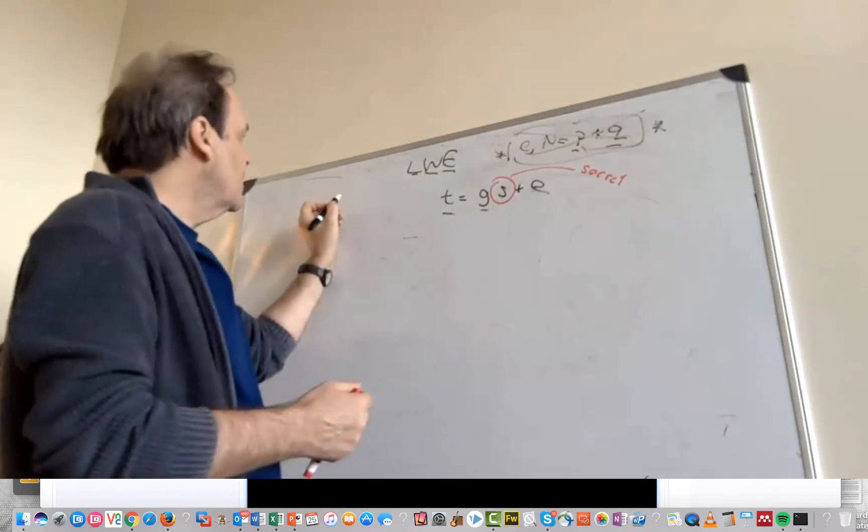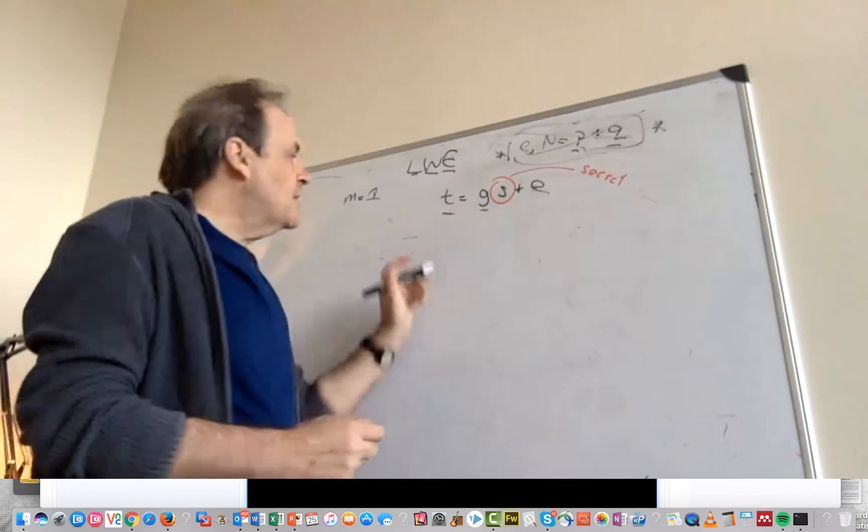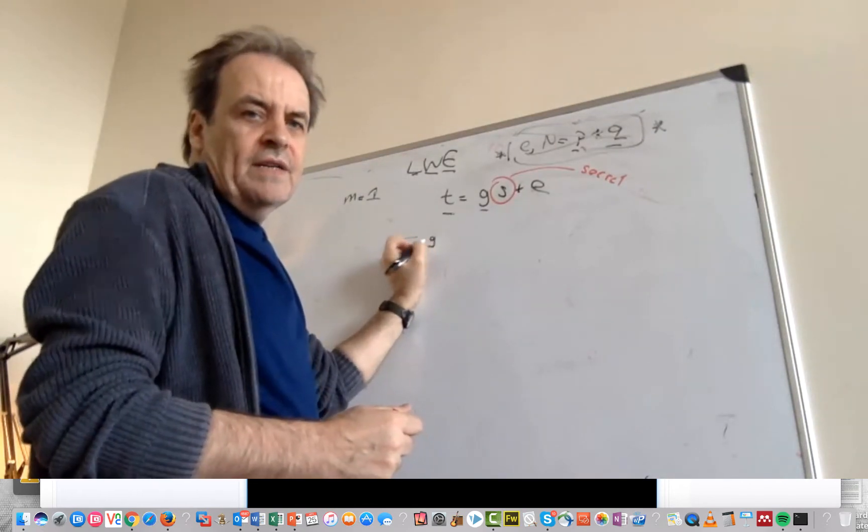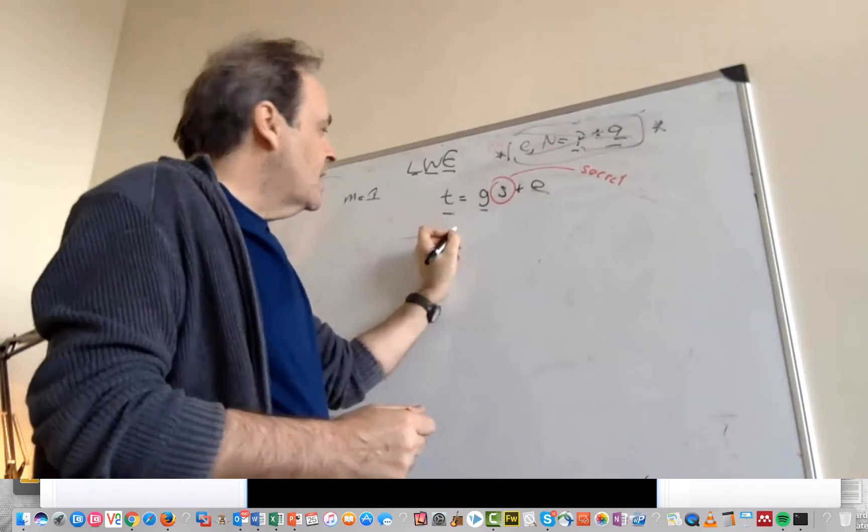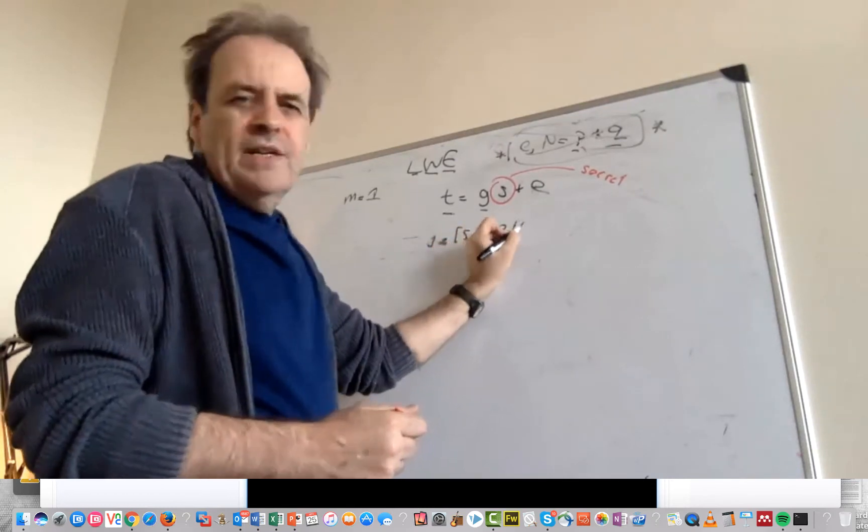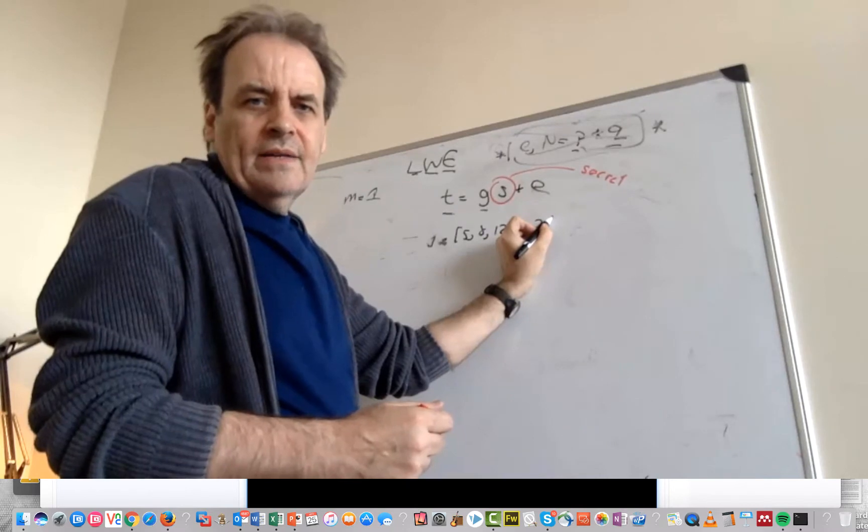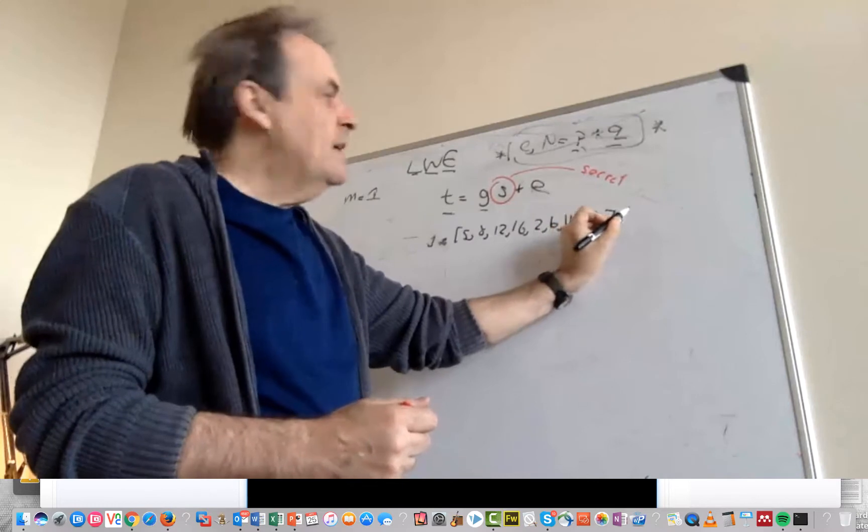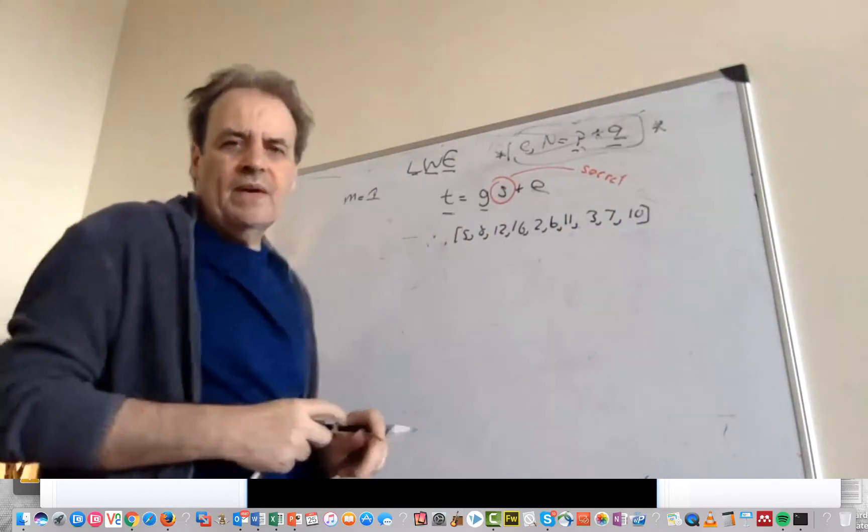So let's take an example. Let's say the message we want to send is a 1. The first thing that we do is we create a random set of numbers and in this case we will create random numbers of 5, 8, 12, 16, 2, 6, 11, 3, 7 and 10. So those are the random numbers that we actually create.